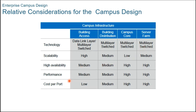Regarding price, the price per port increases with increased performance and availability. For the campus core, it requires a guarantee of higher throughput so that it can handle all traffic flows and not introduce additional delays or drops to the network traffic. The edge distribution does not require the same performance as the campus core; however, it can require other features and functionalities that increase the overall cost.